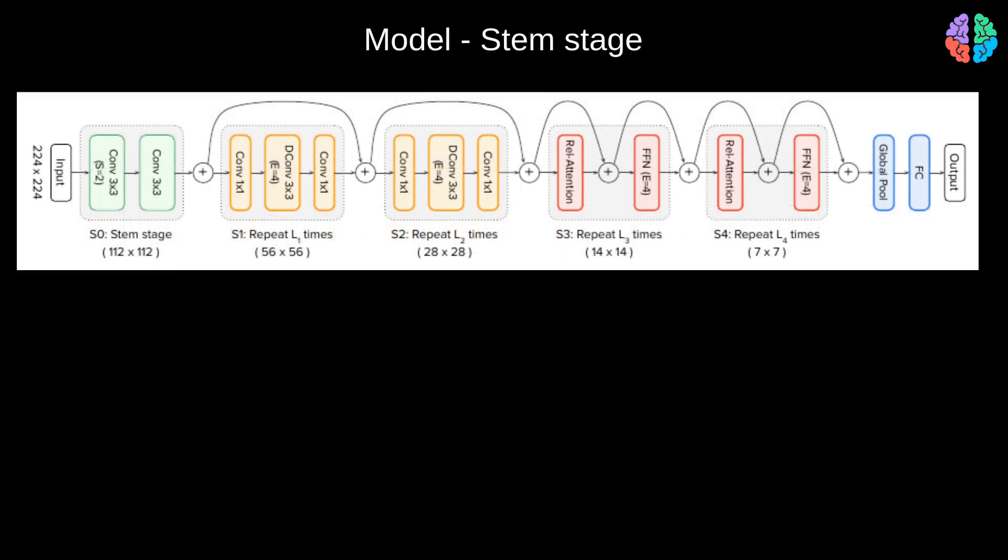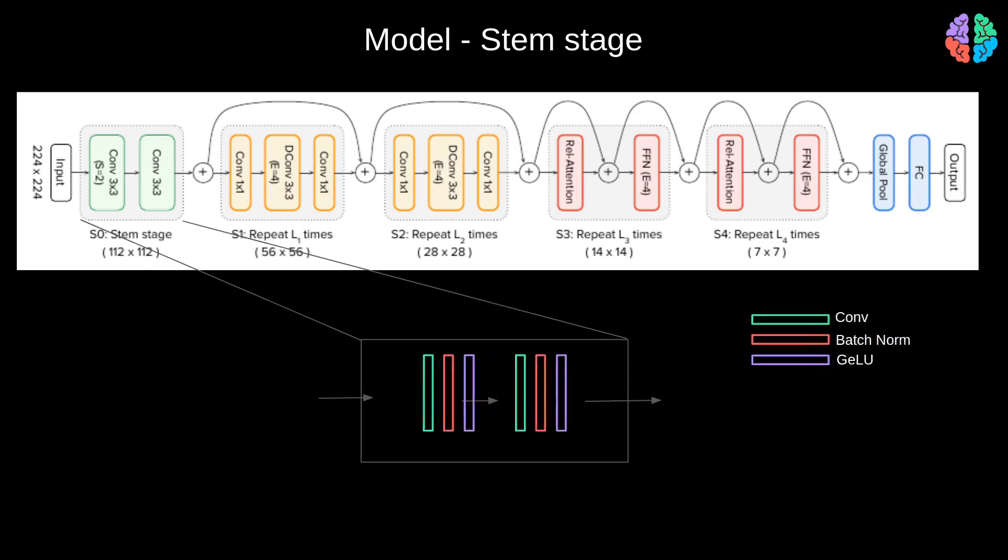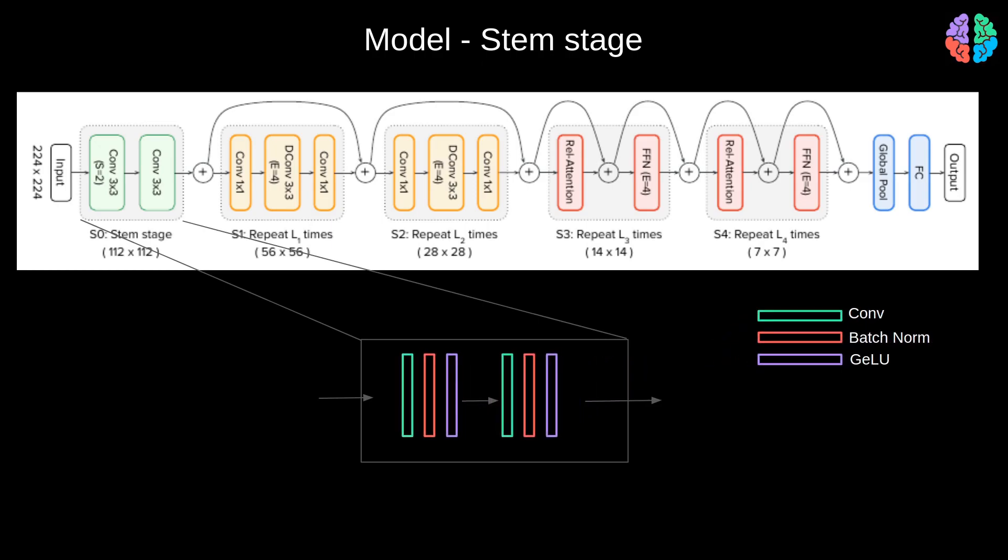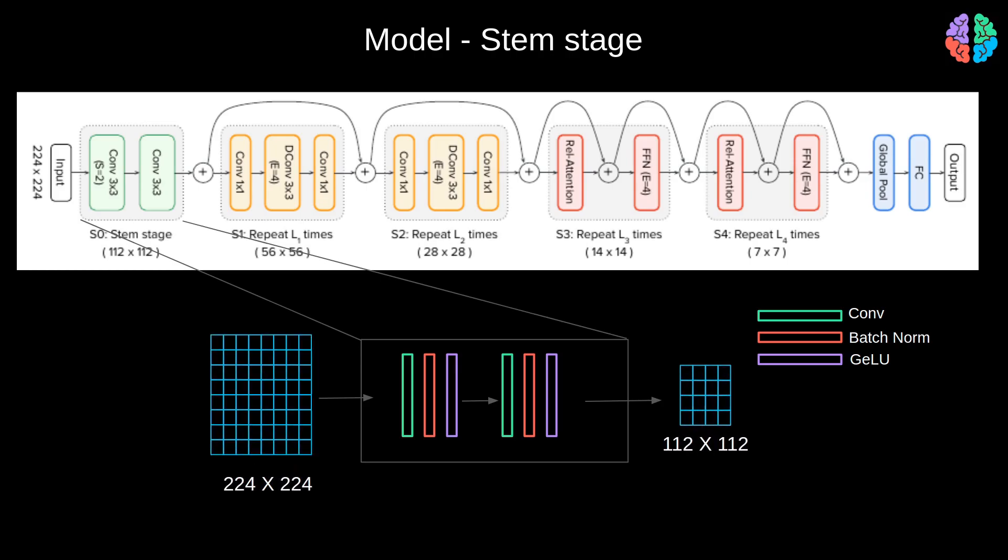The purpose of the stem stage is to simply reduce the input to a manageable dimension so that we can do heavy computations like attention computation easily on the lower dimension. This stem stage has a sequence of conv, batch norm and activation layer like GALU as shown here. Even though it's possible to have a single down sampling layer like in vision transformer, we have illustrated a simple two-stage convolution block with a stride of 2x2. So if we take an input image of size 224 by 224, the stem stage should be able to half the input to a size of 112 by 112. So the stem stage is that simple.